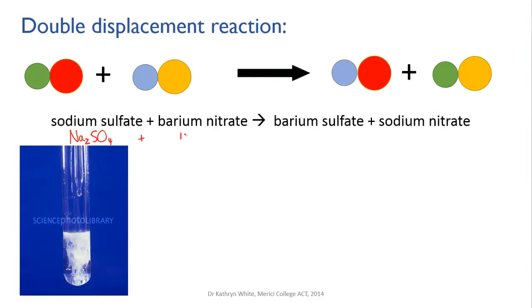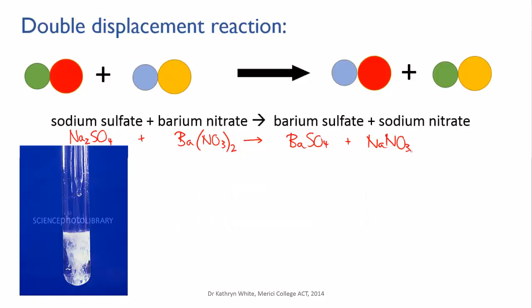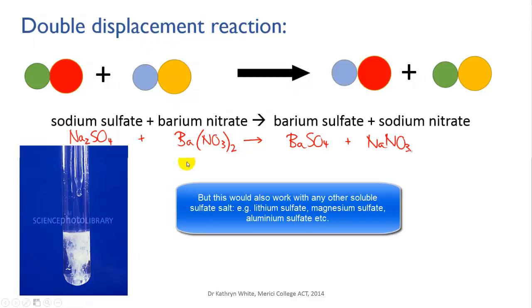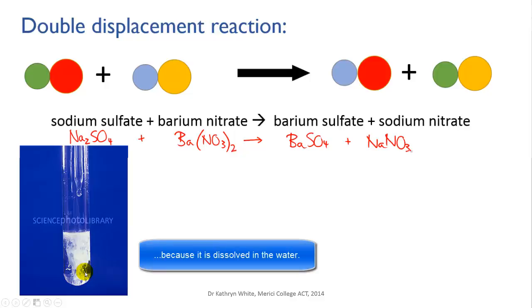An example is the reaction of sulfate salts with barium nitrate. Barium nitrate is soluble in water but barium sulfate is not — it's a white powder. So if barium nitrate is mixed with any other sulfate salt, the barium and sulfate get together and form a white precipitate, which can be used as a test for sulfates. The reaction shown is sodium sulfate with barium nitrate. Both solutions are colorless and look like water, but when mixed the ions swap and barium sulfate forms as an insoluble white precipitate. Sodium nitrate is the other product, and while it's also a white powder in pure form, it is soluble in water so you don't see it form.